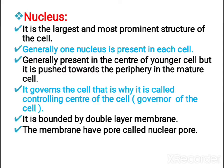Sometimes, in a mature cell, due to some growth features, the nucleus can be pushed towards one side of the cell. It governs the cell, that is why it is called the controlling center of the cell, the governor of the cell. It is surrounded by a double layer membrane called the nuclear membrane.